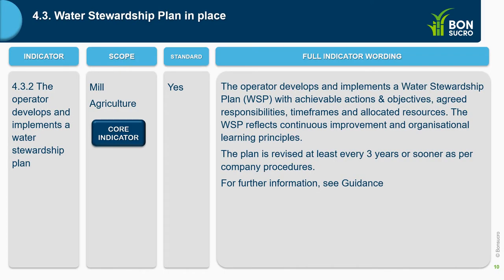The second indicator, 4.3.2: the operator develops and implements a water stewardship plan. This is a core indicator for mill and agriculture. The operator develops the plan with all requirements of the WorldSucre Production Standard, and that plan needs to be revised at least every three years or sooner, as per company procedures.